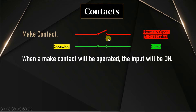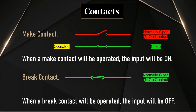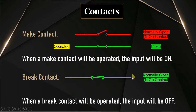Similarly, we have another contact called the opposite of make contact — the break contact. Initially, in the normal state, the contact will be in a closed condition. This contact is already in touch with the other point; it is already closed. If we want to change the state of the switch, we have to break the contact. So the default state of this switch is closed, and we call it a normally closed contact, or NC contact.